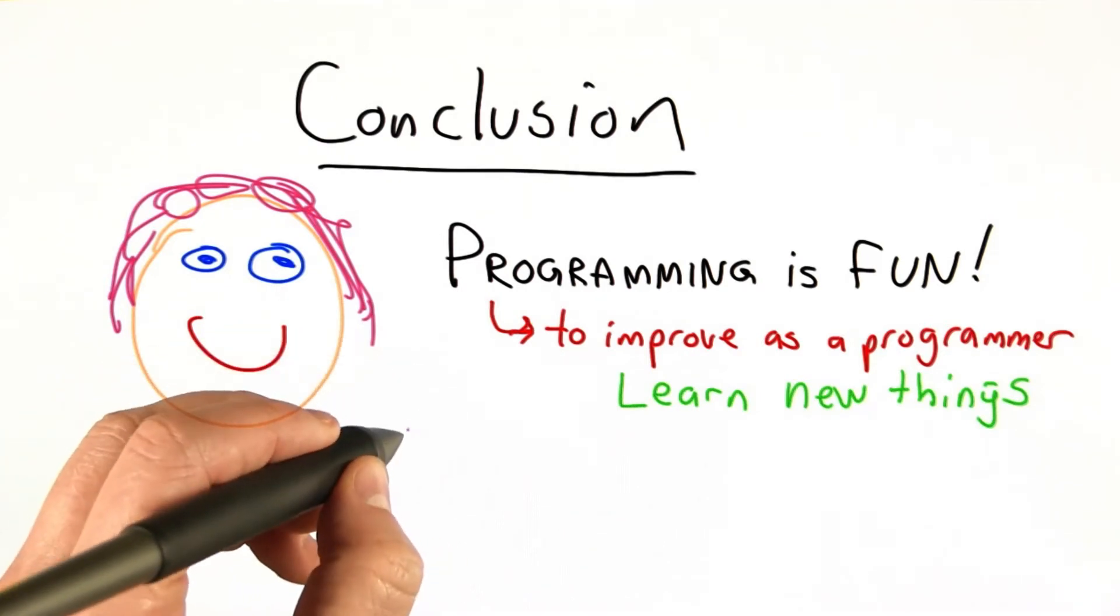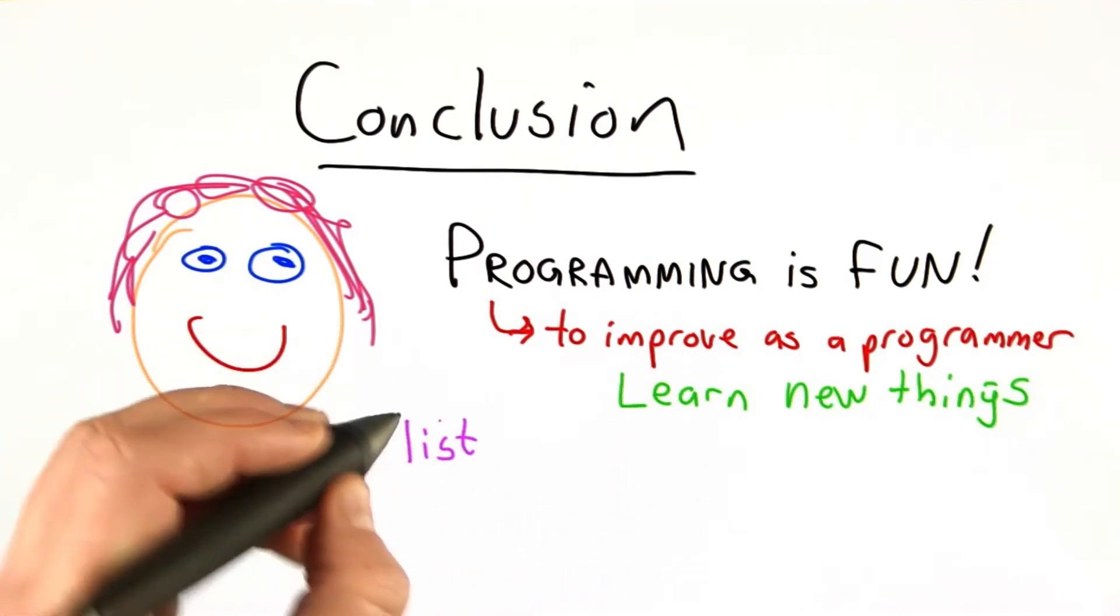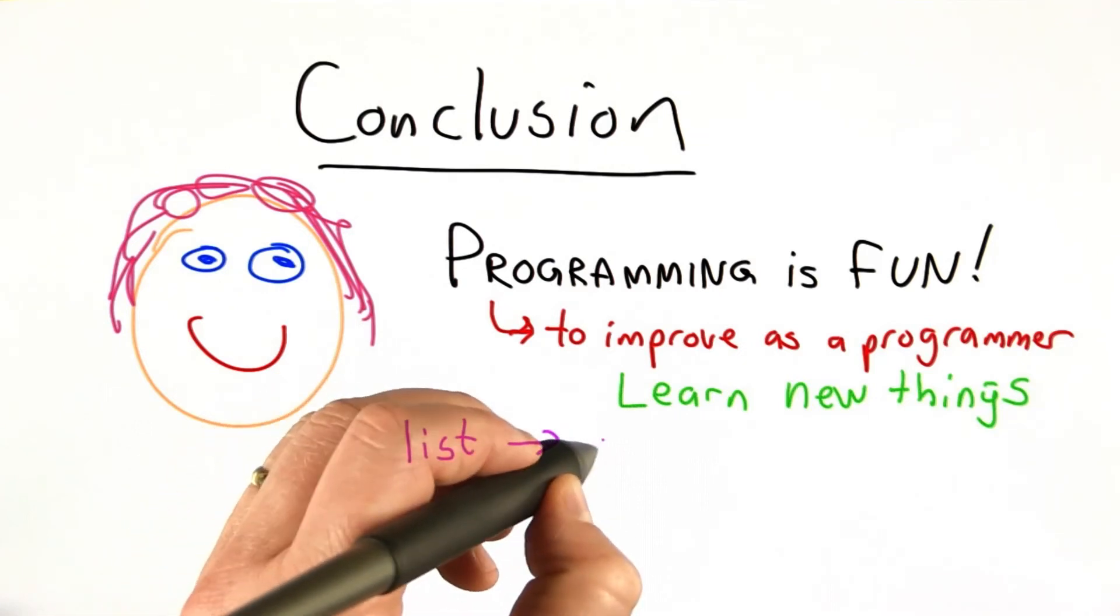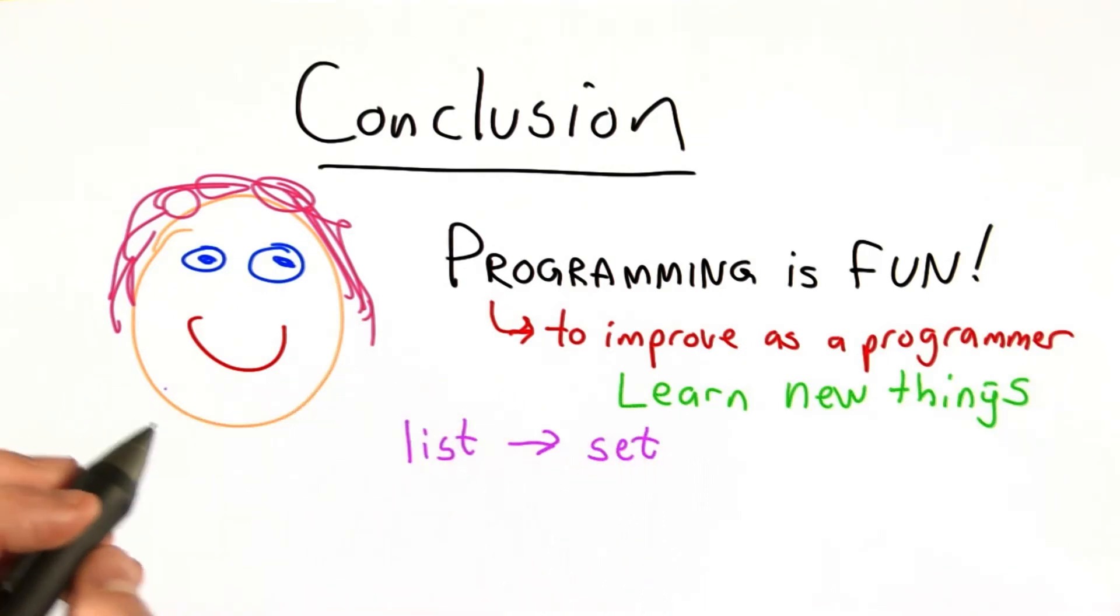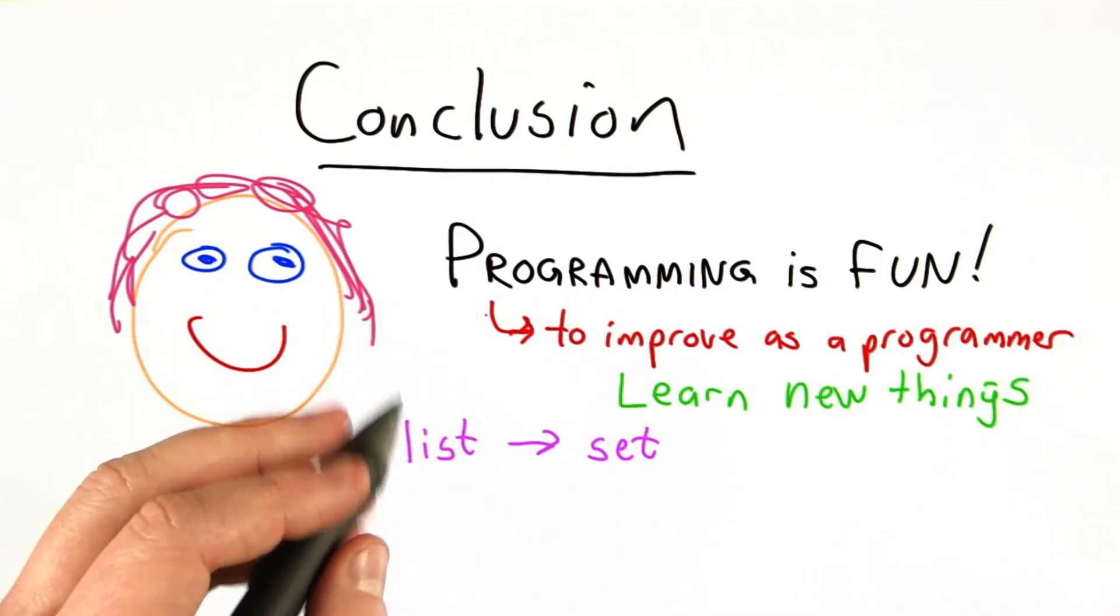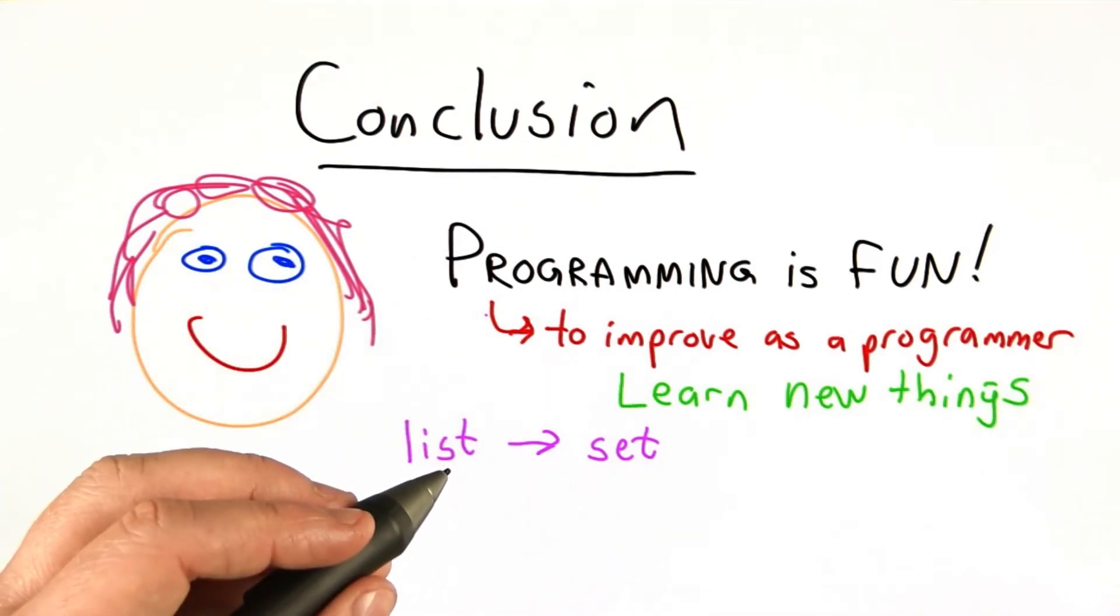In this unit, we saw a simple example of that where by knowing about lists, you could learn about sets that have different properties and make it much easier to implement things like union because that's a built-in operation for sets.